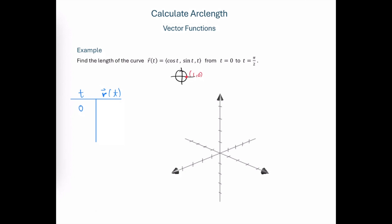When the value of t is equal to 0, the cosine of 0 is 1, so the x component is going to be 1. The sine of 0 is 0, so the y component is going to be 0, and then we have 0 in for t, which is going to give me a z component of 0 as well.